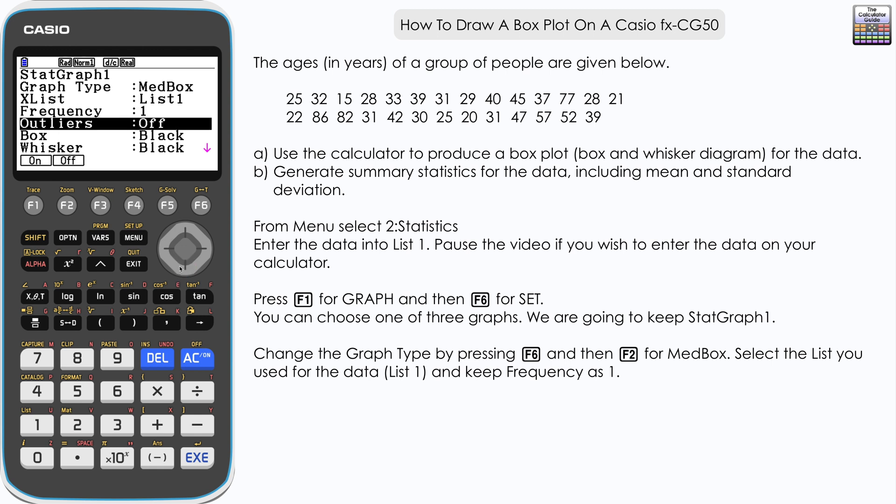Now here you can choose whether you have outliers on or off. We don't have any outliers for this data set, but if you did, you may want to choose here whether you want to keep them on or off, and then the remaining options are color options.